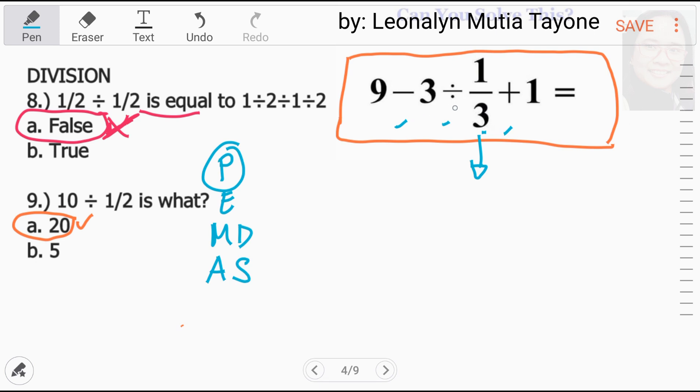Then, doon tayo sa division kasi yan yung higher dito. Ang next, step number 4 na yung subtraction at addition natin. So, division tayo. Ngayon, division of fraction. So, 3 divided by 1 third.